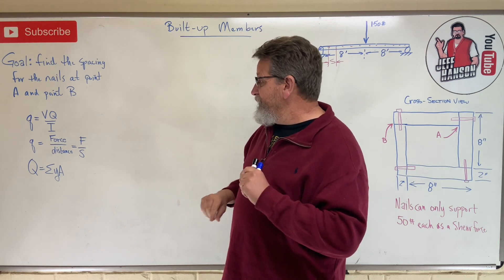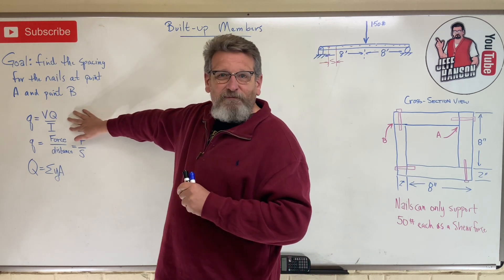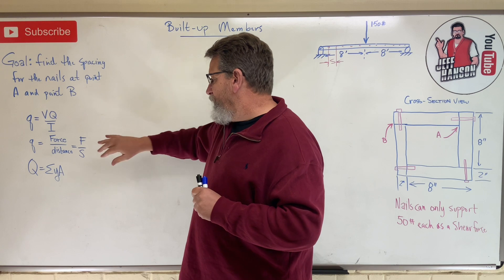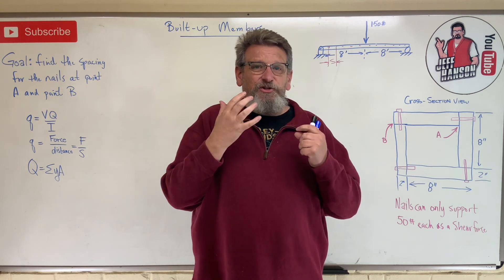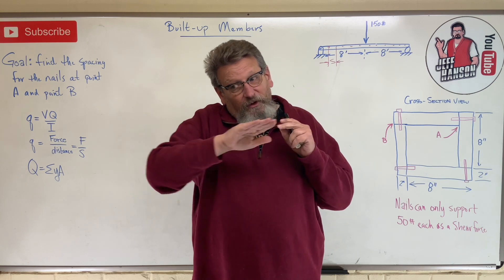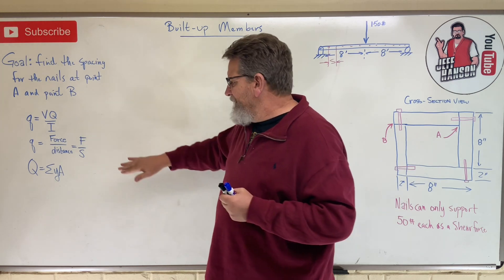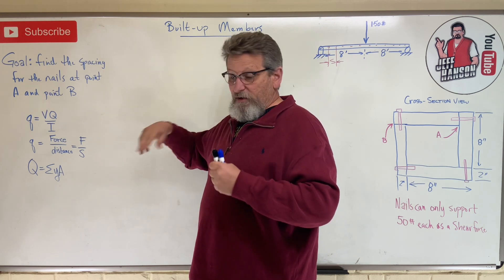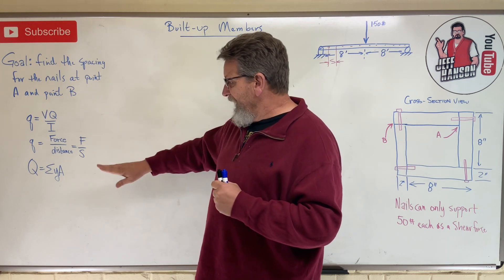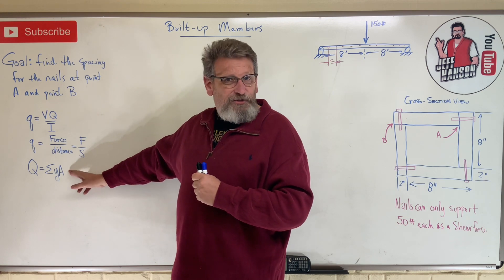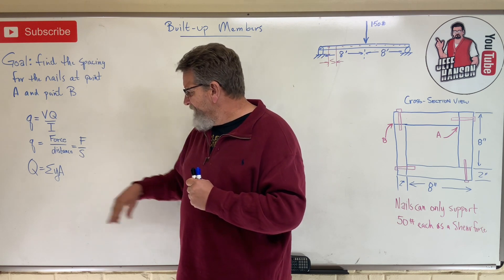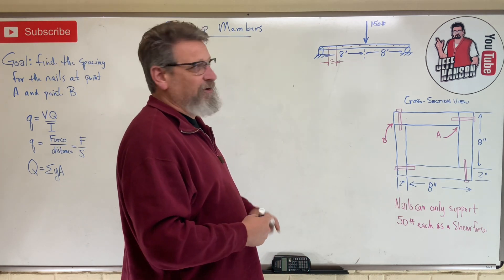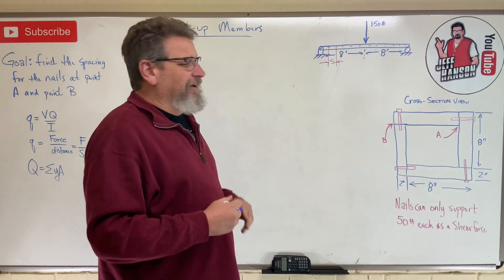We're going to use our shear flow equations. We have the little q equation: q equals VQ over I. Then we have q equals F over s, where little q is shear flow — a force per distance along the shear planes. It's the force divided by the spacing between fasteners. The last equation we'll employ is Q equals ȳ times A.